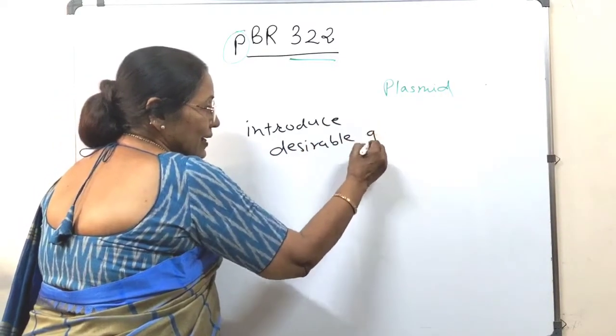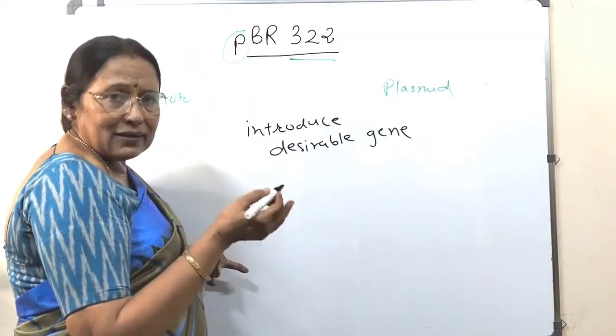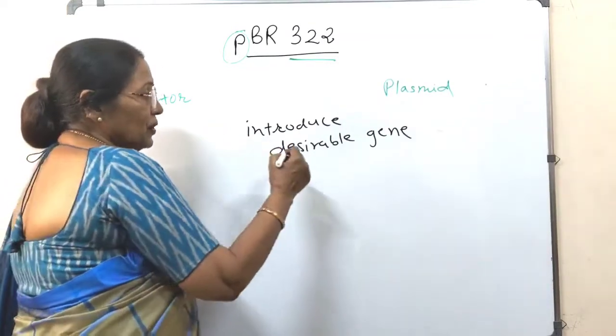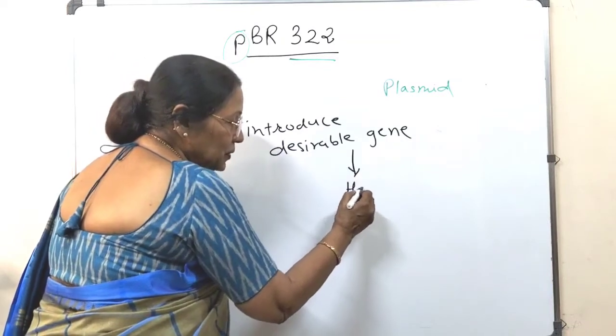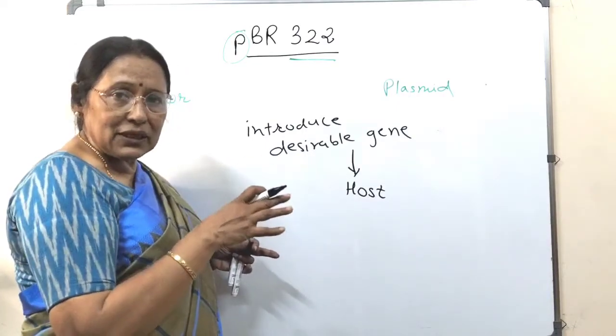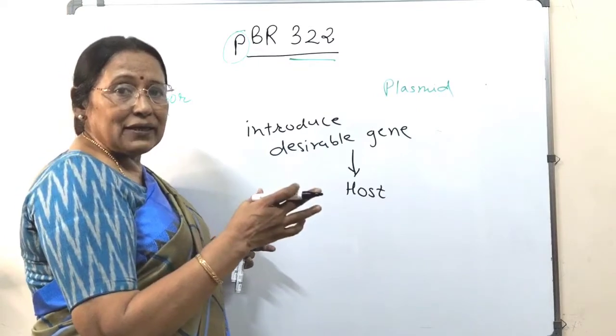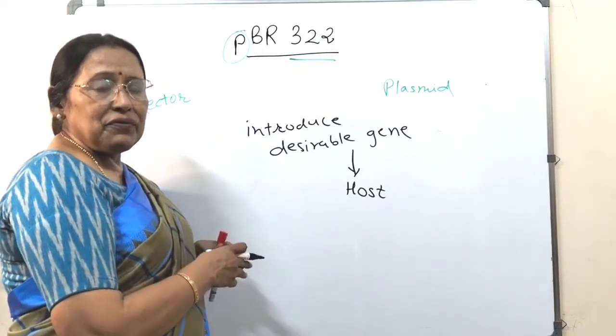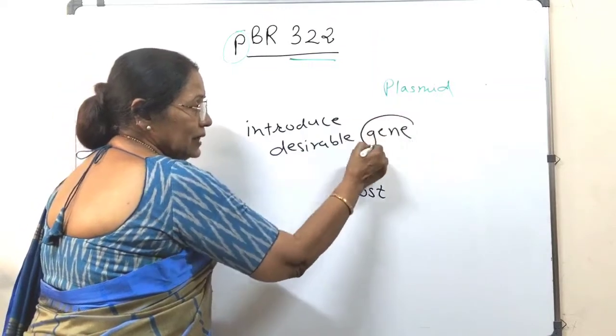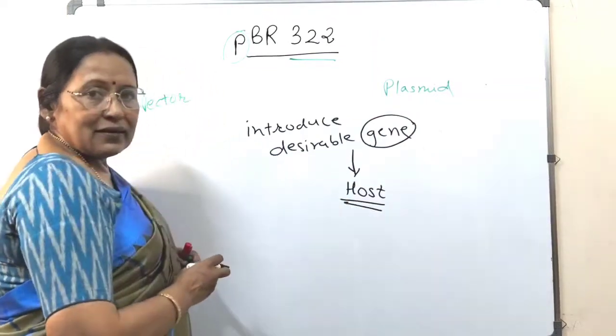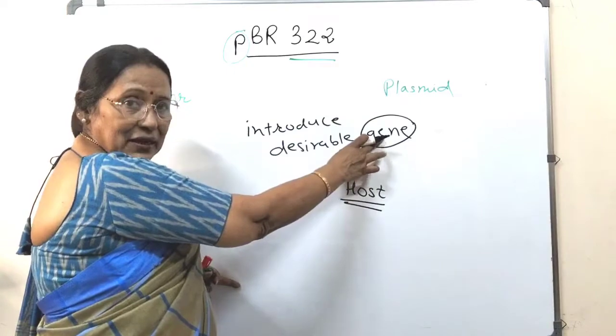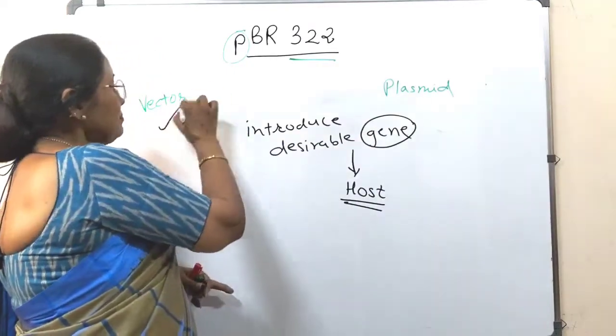One gene that we have removed from animal cells, bacterial cell, fungal cell, it can be from anywhere. Its multiple copies, its product we want. So we want to introduce this gene into a host which multiplies very fast, so that all its offsprings will be having the same gene and we will get the multiple copies, the clones of the genes will be produced and we will get so much more of the product. So our intention is to introduce the desirable gene into the host. And the one which helps us in doing this job, the introduction of this gene into the host, they are called the vector.